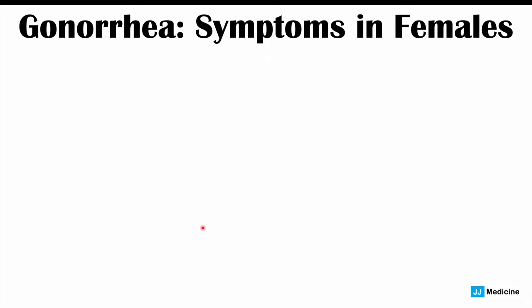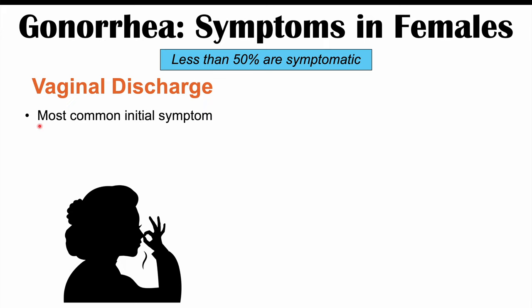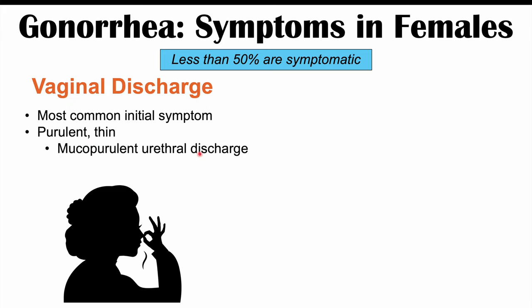In biological females, gonorrheal infections are less likely to show symptoms — less than 50% are symptomatic. The infection often affects the cervix, causing cervicitis. If female patients are symptomatic, vaginal discharge is the most common initial symptom, often purulent or thin, and sometimes with mucopurulent urethral discharge as well. The discharge can also be malodorous. Dysuria — a burning sensation when urinating — may also occur.